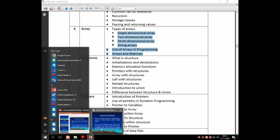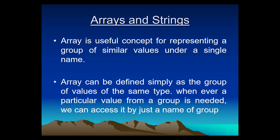Let's start with the definition of array. Array is a useful concept for representing a group of similar values under a single name. Array means a group of values described by a single name, which contains the same type. Array can be defined simply as a group of values of the same type. Whenever a particular value from the group is needed, we can access it by the name of the group — that is the functionality of array.